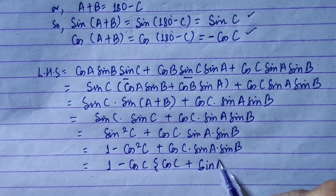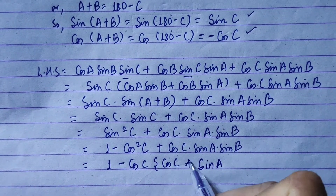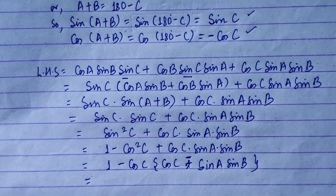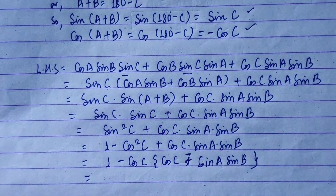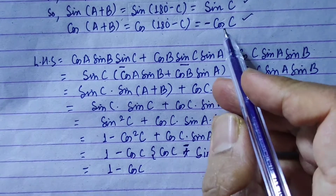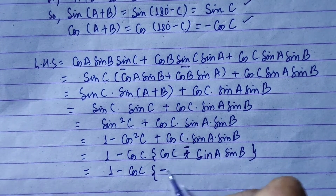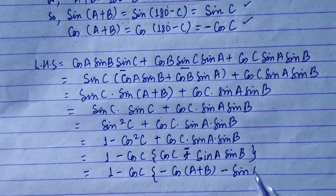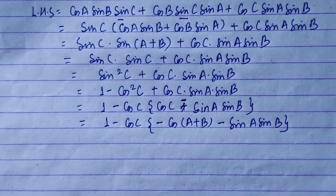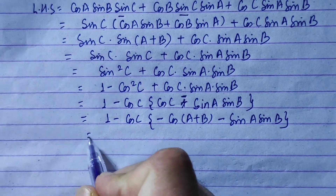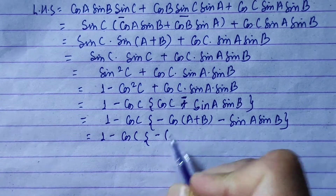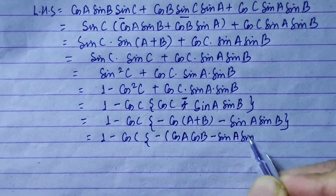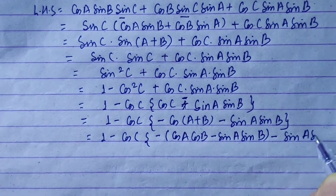We use the expansion: cos(a plus b) equals cos a cos b minus sin a sin b. So we get: 1 minus cos c, minus cos(a plus b), which gives us 1 minus cos c times (cos a cos b minus sin a sin b), and then minus sin a sin b.